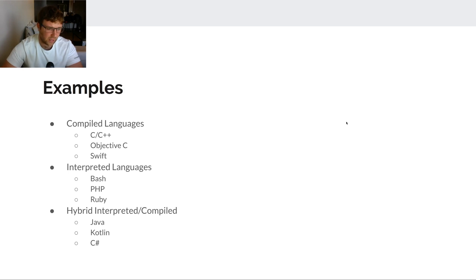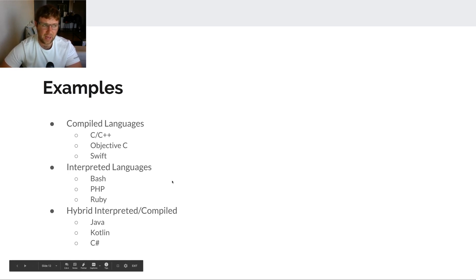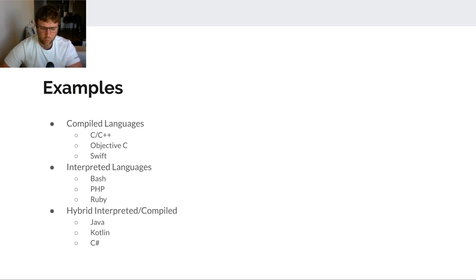Here are some examples: compiled languages include C, C++, Objective-C, and Swift. Interpreted or scripting languages include bash, PHP, Ruby, and JavaScript. Hybrid interpreted-and-compiled languages include Java, and Kotlin — which is typically compiled down to JVM bytecode, though Kotlin compilers can also compile to native code. C# is similar, running in the .NET environment.